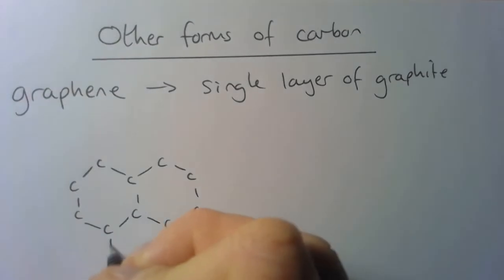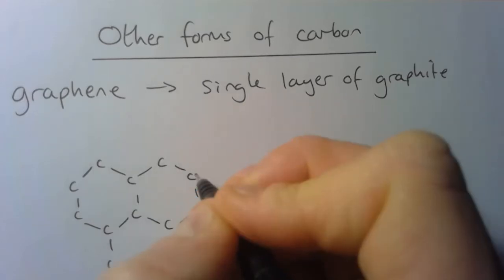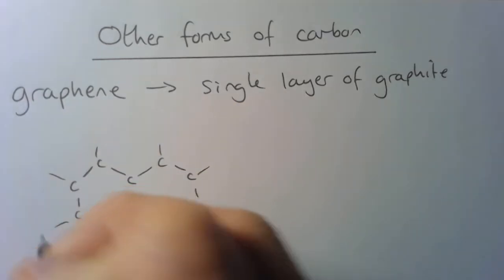But within that structure, every carbon atom is bonded to three others in a hexagon type shape, hexagon structure.